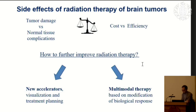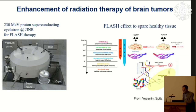We need to find ways to improve radiation therapies. There are probably two main strategies: one is to improve our technique, and the second — riskier but still very promising — is the usage of so-called multimodal therapy, based on modification of different therapeutic strategies through modification of the biological response.